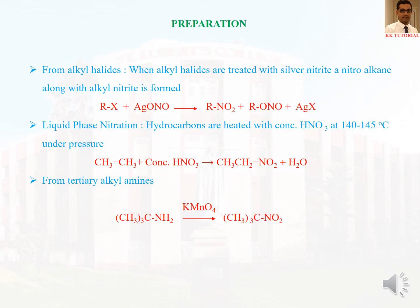We will now go through the preparative methods for nitroalkanes. The first method is from alkyl halides. When an alkyl halide is heated with an ethanolic solution of silver nitrite (AgNO2), nitroalkane along with alkyl nitrite is formed. The equation, when balanced, gives two moles of each product. So the first preparative method is: alkyl halides treated with silver nitrite give nitroalkane along with alkyl nitrite.